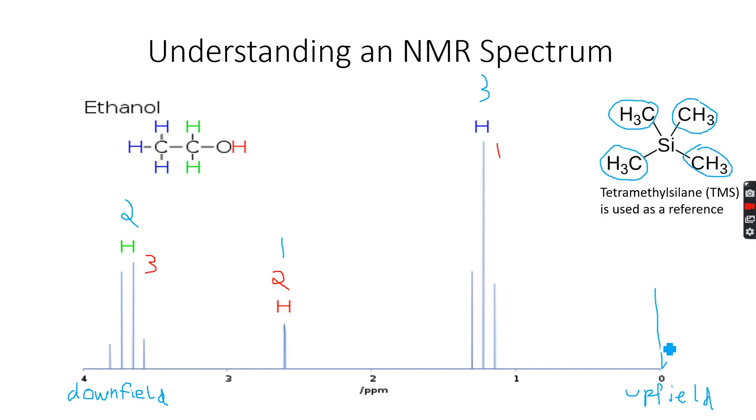For that reason TMS is used as a reference. It gives a really strong peak over here so we take that peak as zero chemical shift and chemical shift is measured in parts per million. So we take this as zero parts per million and then we form a linear scale according to where TMS lies.